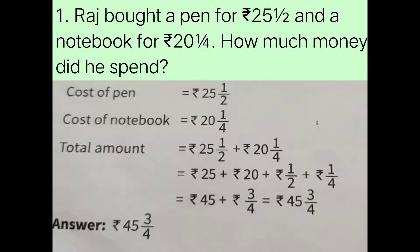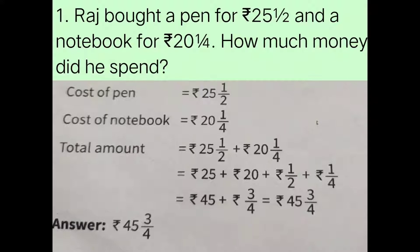Here we have the sum: Raj bought a pen for rupees 25 and 1 by 2, and a notebook for rupees 20 and 1 by 4. How much money did he spend? We are going to find out how much money he has spent to buy both things. To find that, we are going to add the numbers given — the cost of the pen, rupees 25 1/2, and the cost of the notebook, rupees 20 1/4.